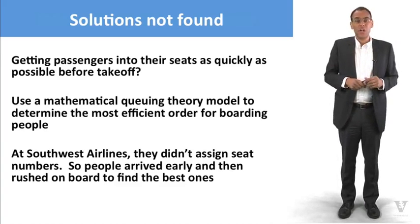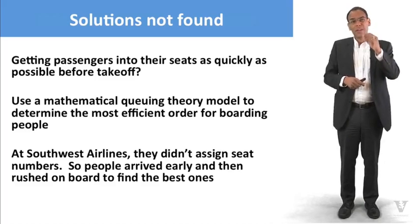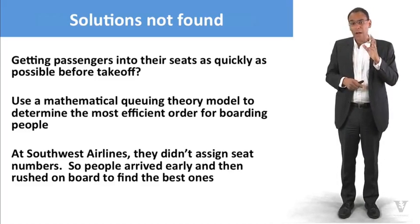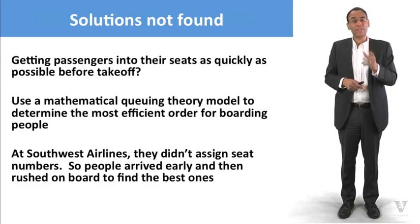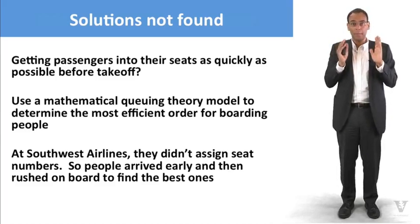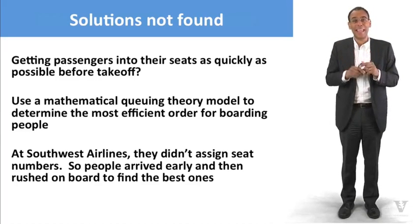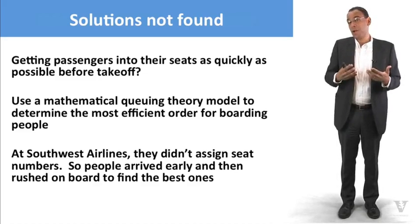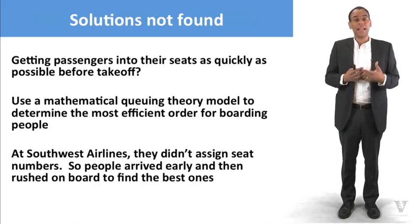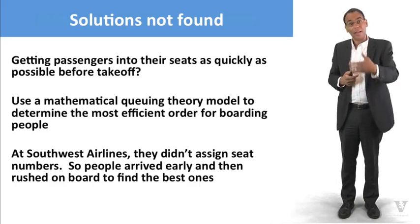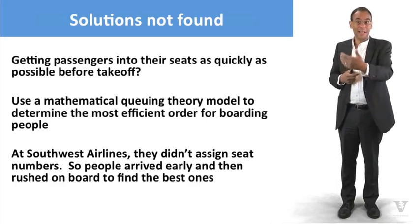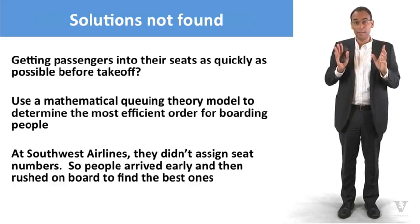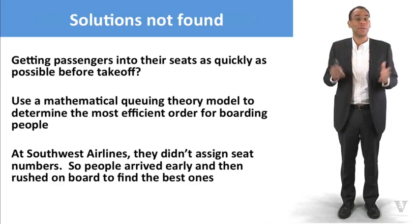What they do is they don't assign seat numbers at all. If you don't assign seat numbers, people think, wow, if I don't show up early, I'm going to get a really bad seat. So people show up early and as soon as the doors open, people run on board, find the seats as quickly as they can and sit down to find the best seats. And that solves a problem in a way that would never have been arrived at using our conscious competent model of analysis and modeling.